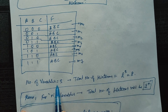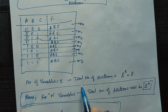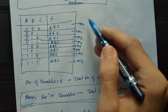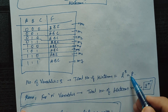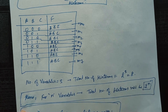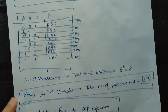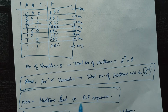The number of variables in this case is 3 (A, B, C). The total number of min terms is 8, which equals 2 to the power 3. Hence, for n variables the total number of min terms is 2 to the power n. Note: min terms lead to Sum of Products (SOP) expressions.